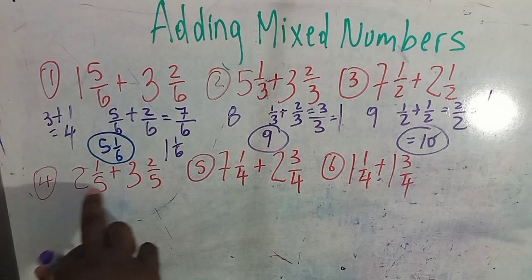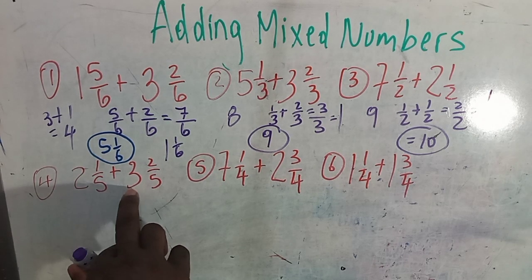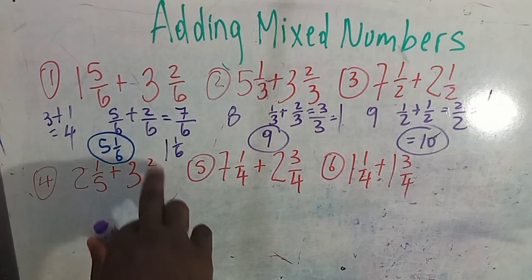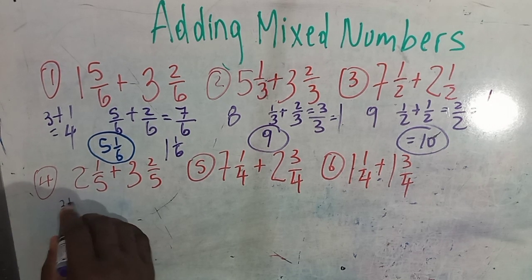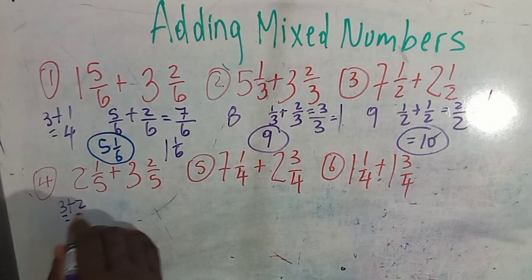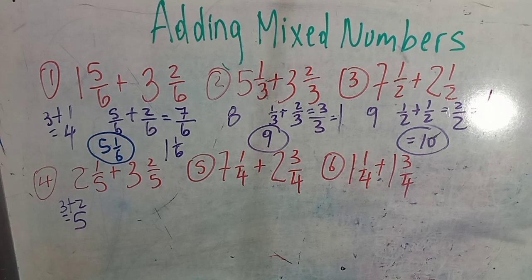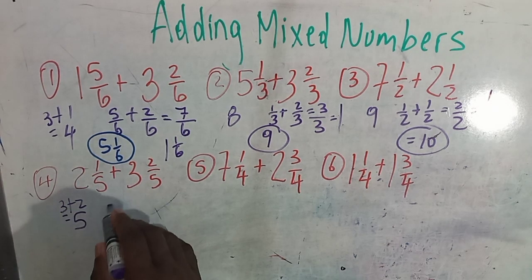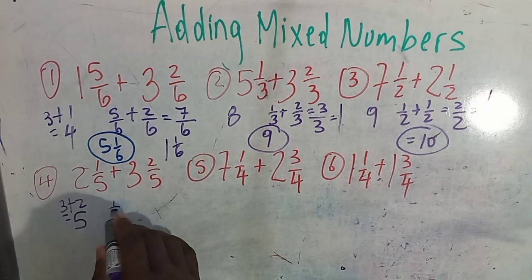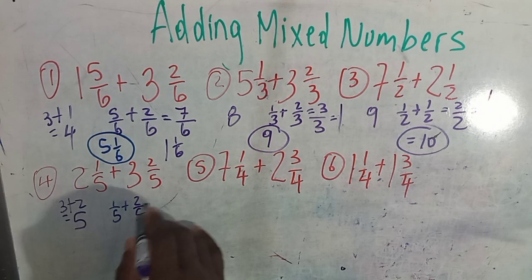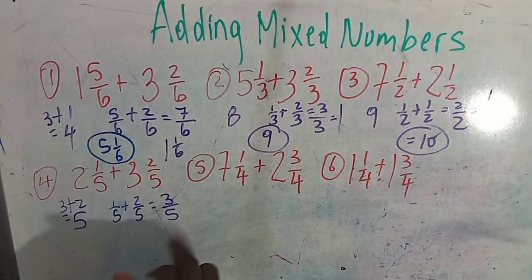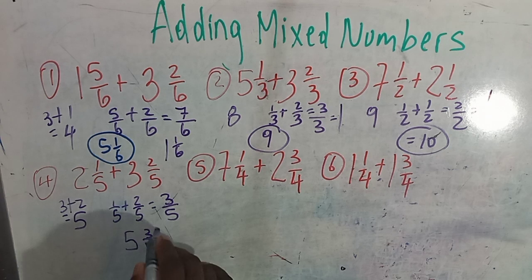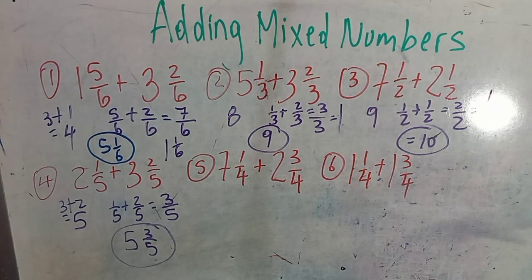2 and 1 fifth plus 3 and 2 fifths. Deal with all numbers: 3 plus 2 equal 5. Deal with the fractions: 1 fifth plus 2 fifths equals 3 fifths. Your answer is going to be 5 and 3 fifths.